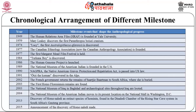In 1959, Mary Leakey discovered the first Paranthropus boisei cranium. In 1974, Lucy — the first Australopithecus afarensis — was discovered. In 1977, the Canadian Ethnology Association, now the Canadian Anthropology Association, was founded, and the first Margaret Mead Film Festival was held. In 1984, Turkana Boy was discovered — the common name of Homo erectus fossil KNM-WT 15000, a nearly complete skeleton of a hominid youth who lived during the early Pleistocene. In 1986, the Human Genome Project was launched. And in 1989, the National Museum of the American Indian was founded in the US.